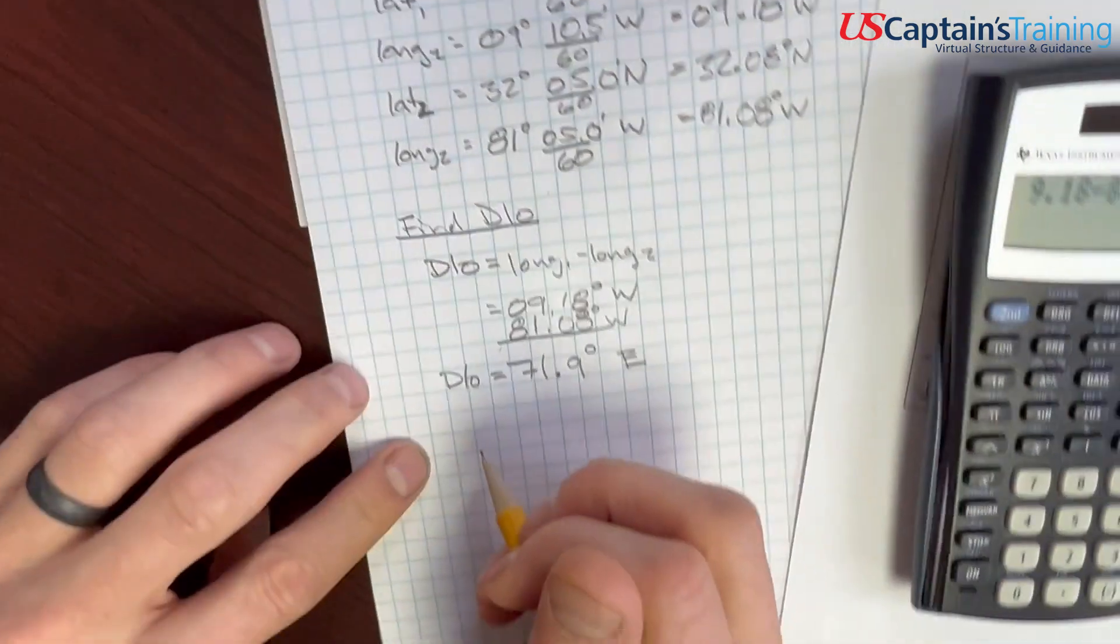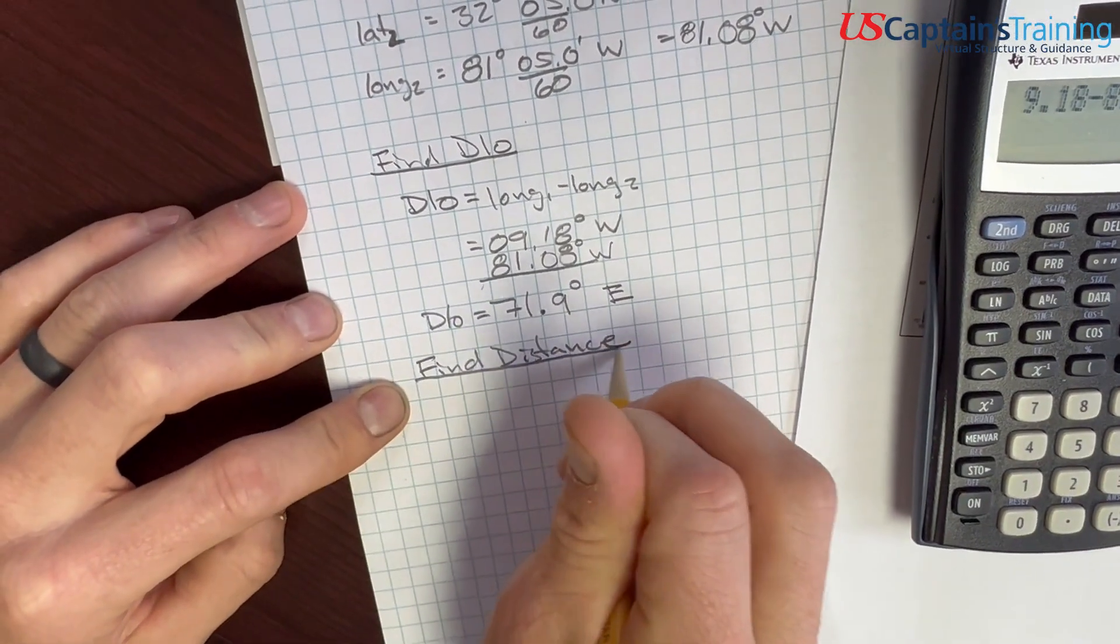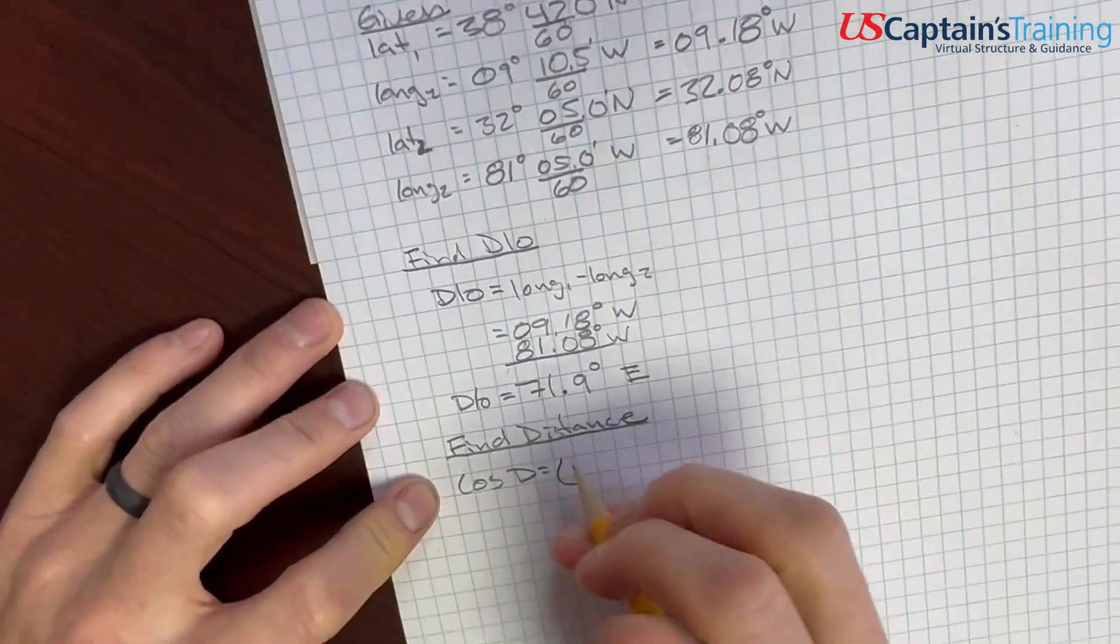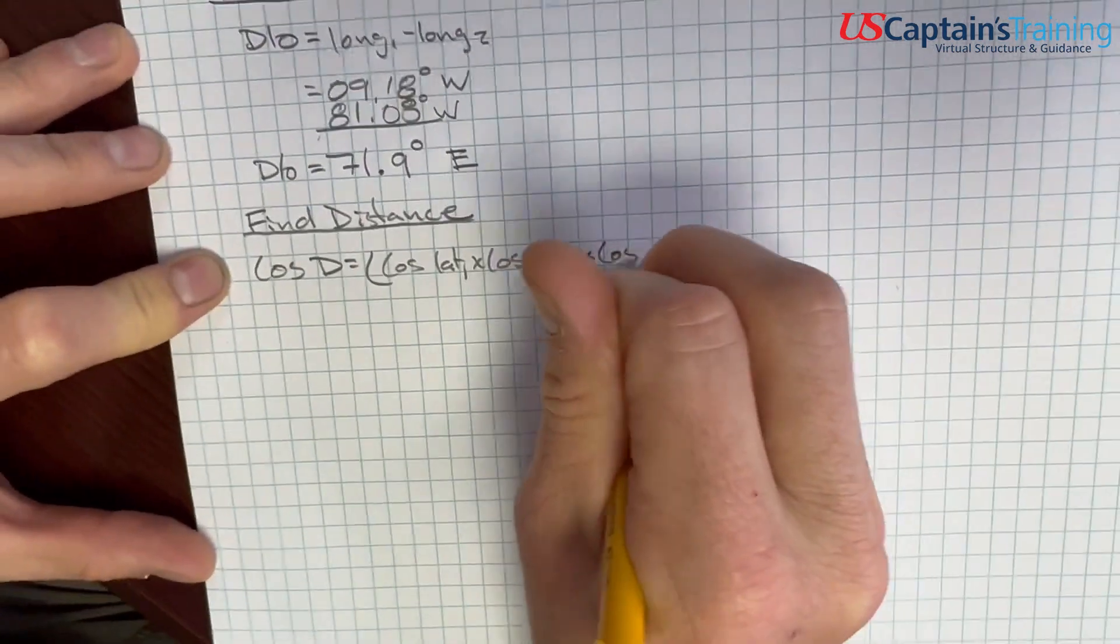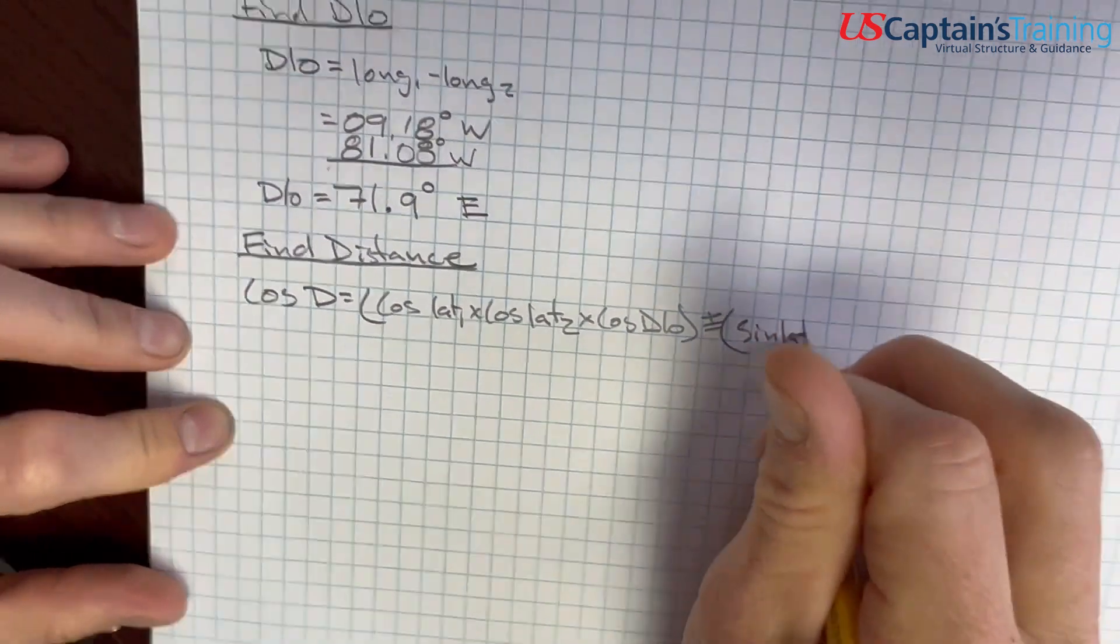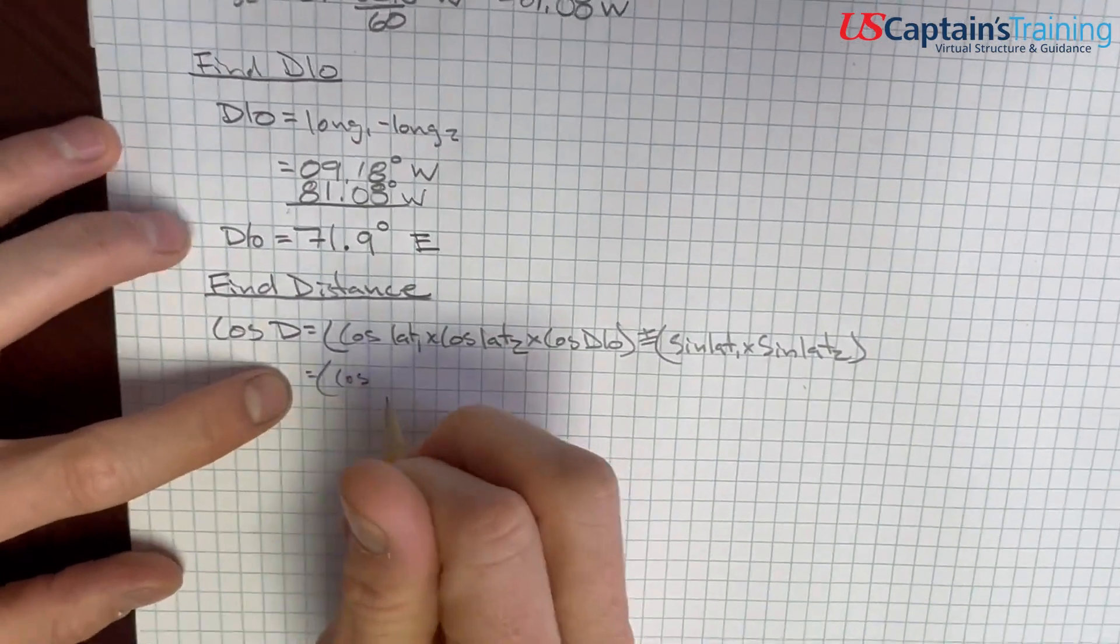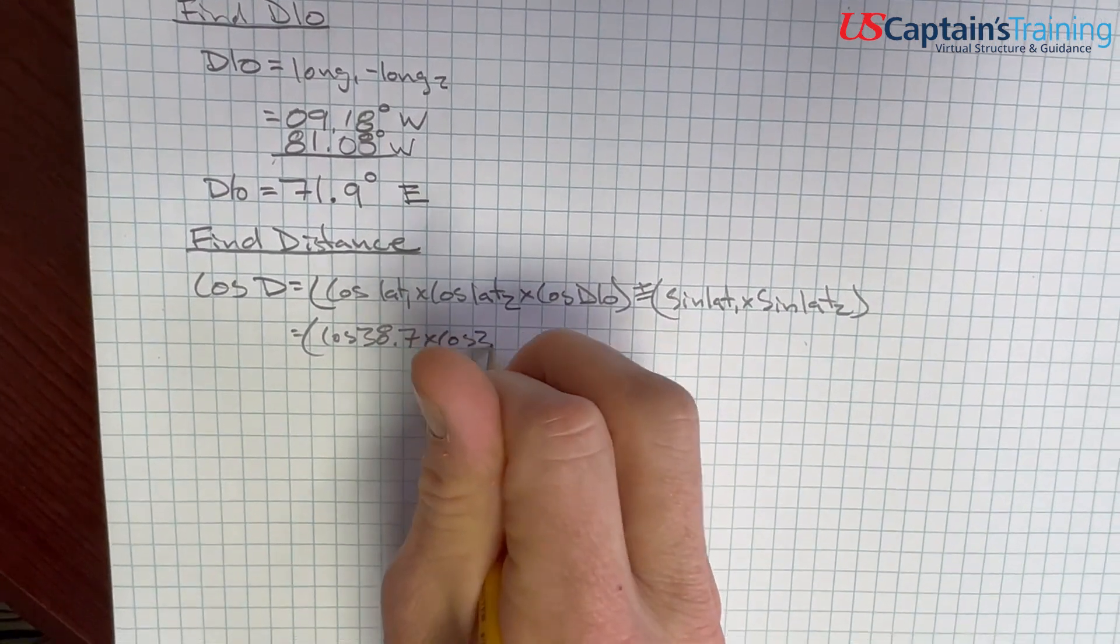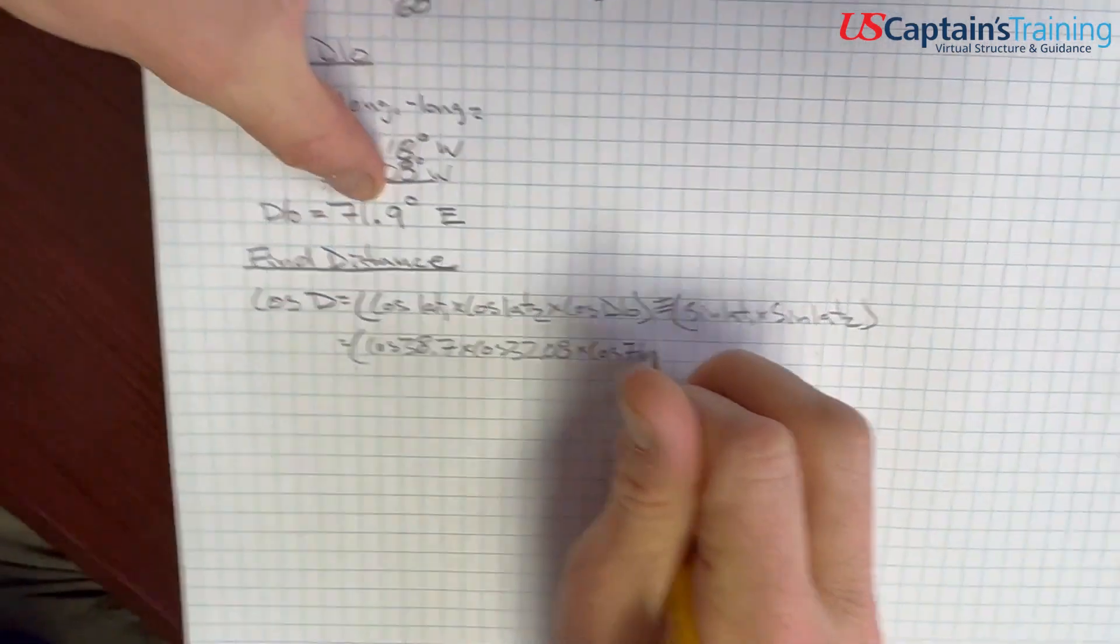And now we need to calculate distance. Find distance. Distance equals, cosine distance equals, get ready: cosine lat 1 times cosine lat 2 times cosine d low. And so we'll start plugging these in. Cosine lat 1, 38.7, times cosine lat 2, 32.08, times cosine d low, 71.9.